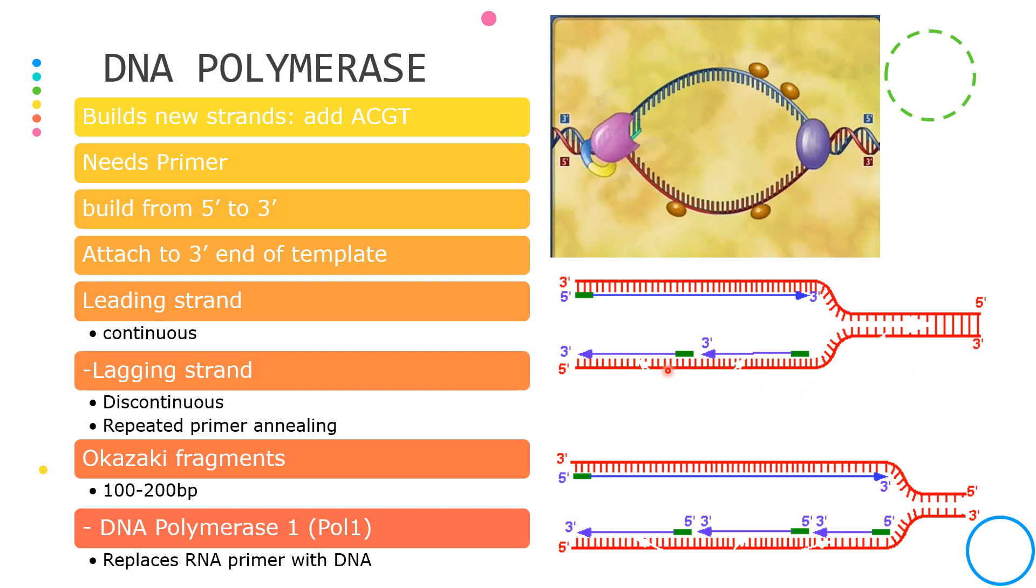Once the 3 prime end is available and is initialized by the primer, the DNA polymerase will start building in the opposite direction, 5 prime to 3 prime, and stops when it reaches the start of the replication fork.